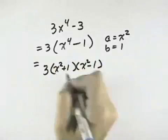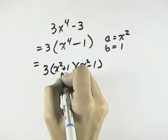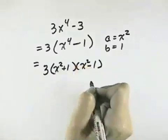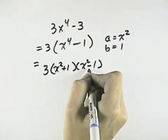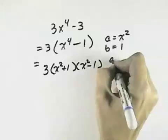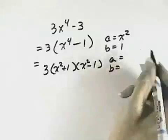Again, we look at each of these factors of each two terms. The sum could only be the sum of cubes, but they're not perfect cubes. The difference could be the difference of squares or the difference of cubes. They are both perfect squares again, so we identify our new a and b.